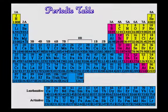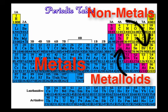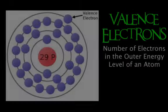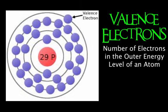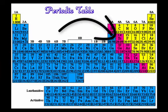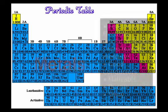Elements are classified as metals, nonmetals, and metalloids according to their properties. The number of electrons in the outer energy level of an atom, also called valence electrons, help determine which category an element belongs in. The zigzag line on the periodic table can help you recognize which elements are metals, which are nonmetals, and which are metalloids.